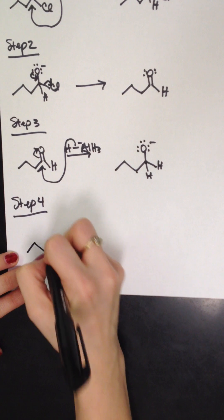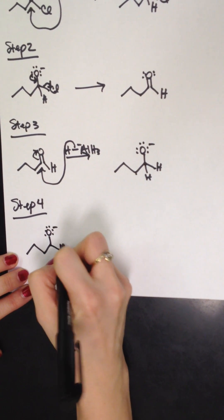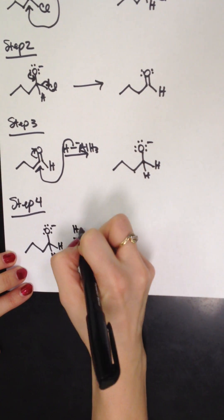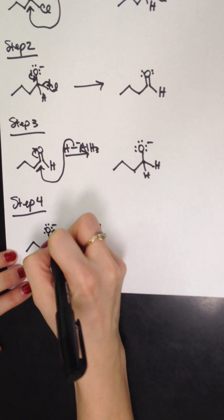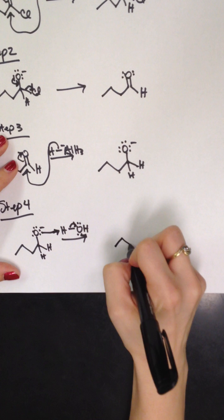So this is called protonation. This is when this negative on this oxygen attacks something different. It attacks water. This forms a different product. It's called an alcohol.